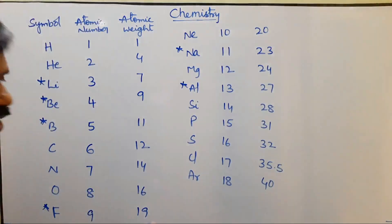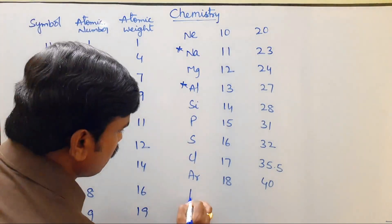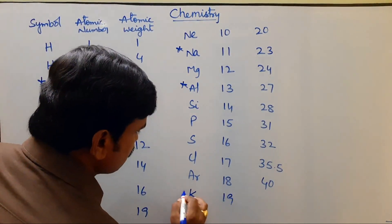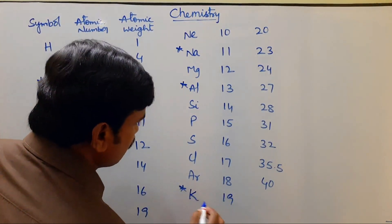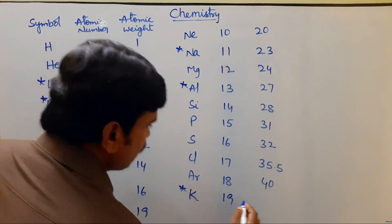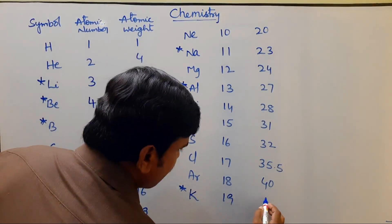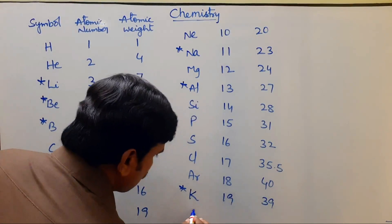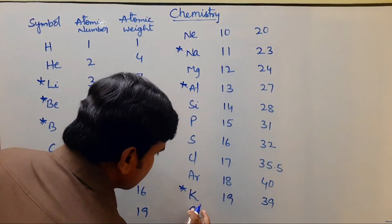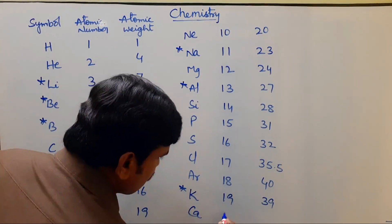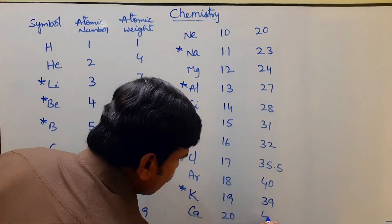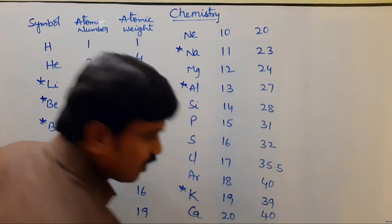The nineteenth element is Potassium. It is also double the atomic number plus one, so its atomic weight is 39. The twentieth element is Calcium, atomic number twenty and atomic weight is forty.